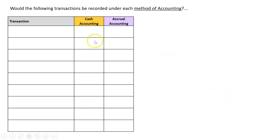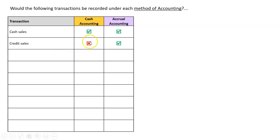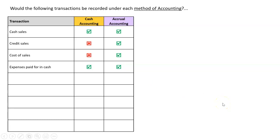There are a series of differences depending on the transaction. A cash sale is a revenue under both methods. A credit sale is not recorded under cash accounting but is recorded under accrual accounting because it has been earned. Cost of sales is not recorded under cash accounting since it's not a payment, but it is an expense under accrual accounting. Expenses paid in cash are recorded under both systems, but expenses incurred on credit are only recorded under accrual accounting.